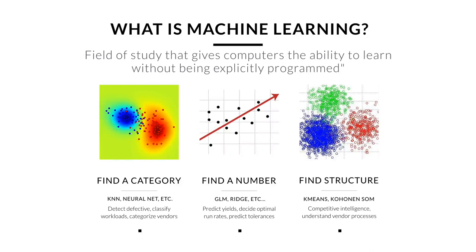There are really three branches of machine learning: finding a category — like whether something is defective or someone is fraudulent; finding a number — approximating production yield or stock market predictions; and finding structure in unlabeled data. The first two are supervised learning. Finding structure is unsupervised learning. There are some neat k-nearest neighbors-like algorithms such as k-means clustering for finding structure, but for now we're focusing on k-nearest neighbors for finding categories and numbers — specifically categorical approaches.